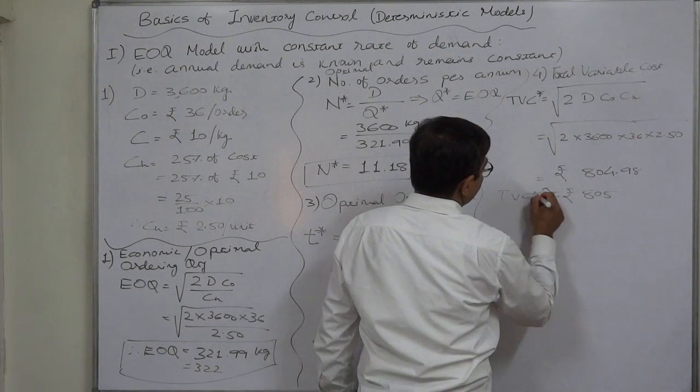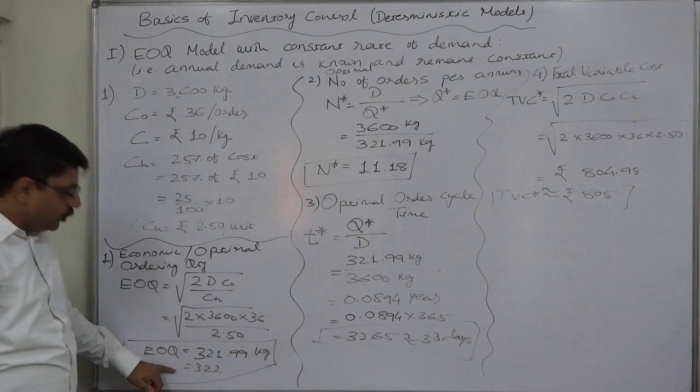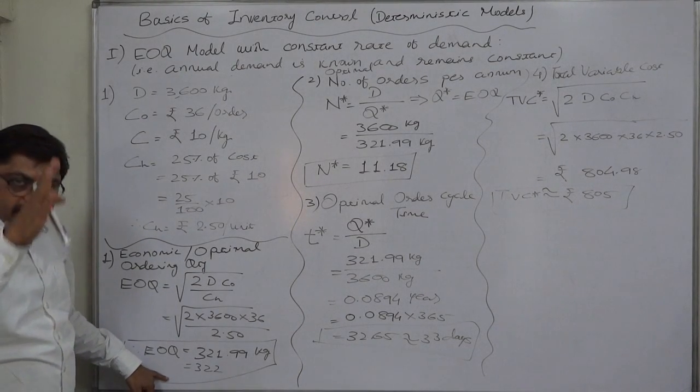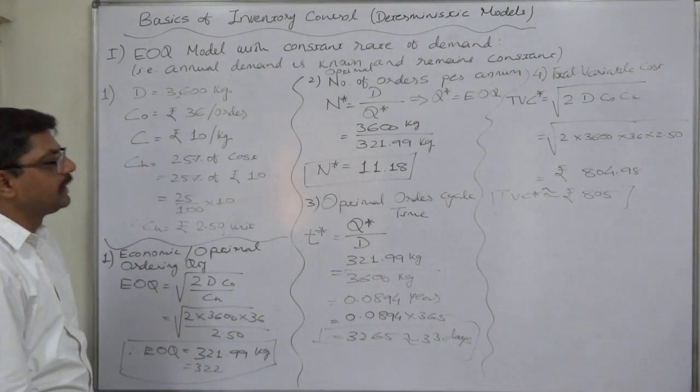This is total variable cost. That means, if we follow EOQ model, that means, in every time, if we place order of approximately 322 kilograms,